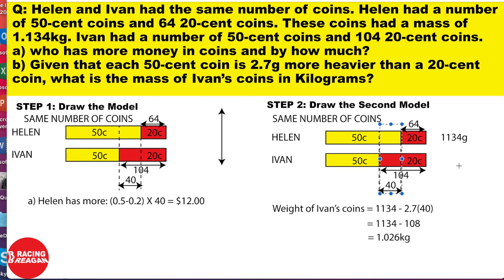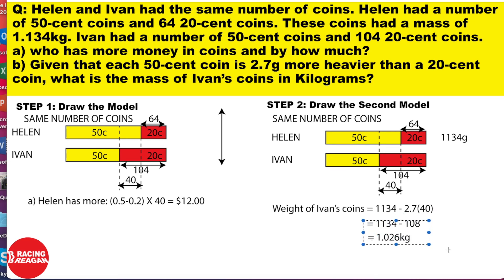Since you have those 40 fifty-cent coins, you need to convert them. The question says each 50-cent coin is 2.7 grams heavier than a 20-cent coin. So take 1134 grams (Helen's mass) minus 2.7 × 40, which equals 108. Then 1134 − 108 = 1026 grams. Since the question asks for kilograms, convert to get 1.026 kg. So Ivan's coins have a mass of 1.026 kilograms. That's how you do this question.